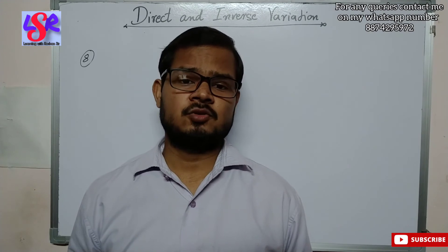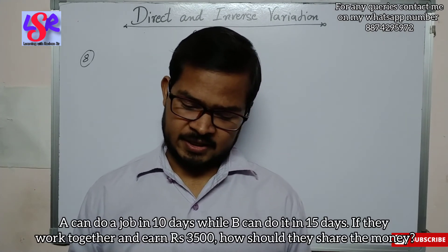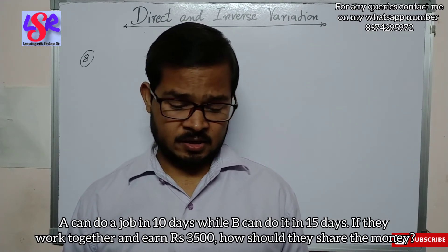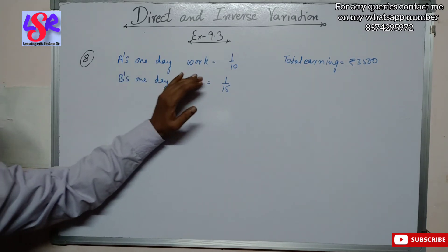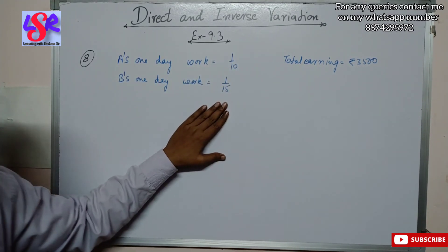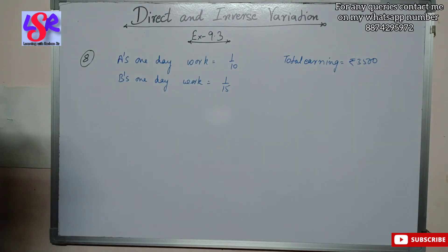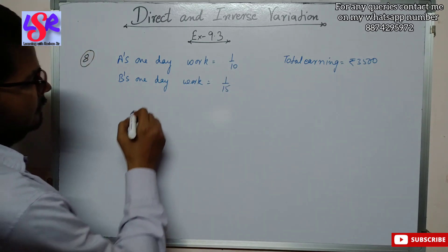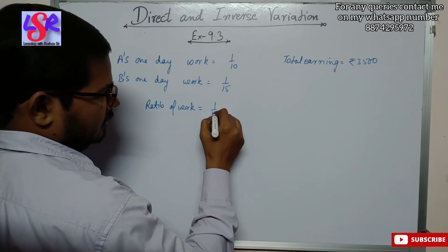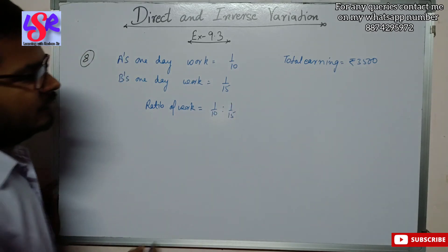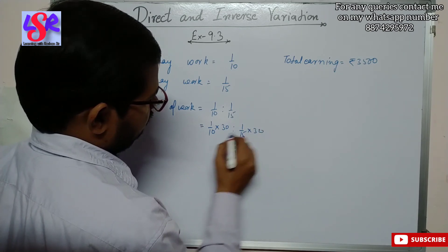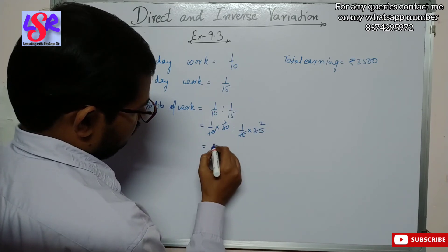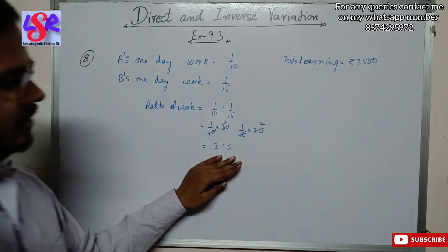Now let's do question number 8. A can do a job in 10 days while B can do it in 15 days. If they work together and earn rupees 3500, how should they share the money? A's one day work is 1 upon 10 and B's one day work is 1 upon 15. We need to divide this amount as the shares of A and B. First we find the ratio of work done: 1 upon 10 is to 1 upon 15. The LCM of 10 and 15 is 30. So 1 upon 10 into 30 is to 1 upon 15 into 30, giving 3 is to 2.